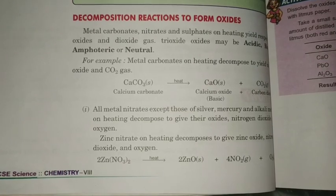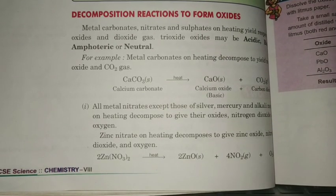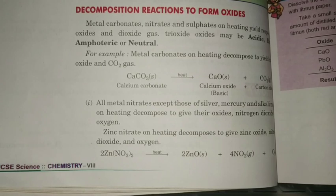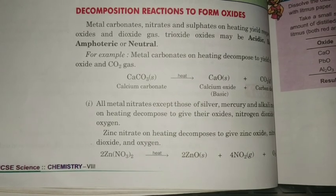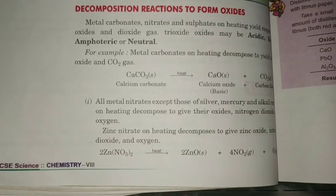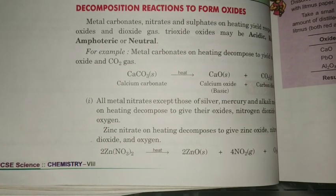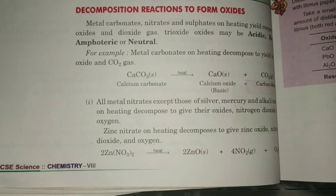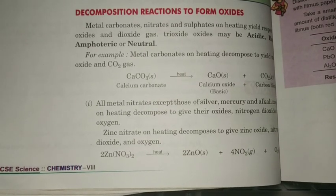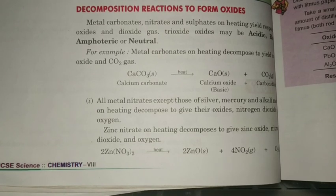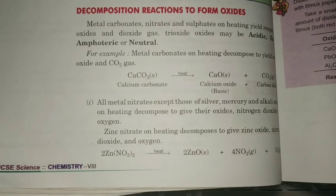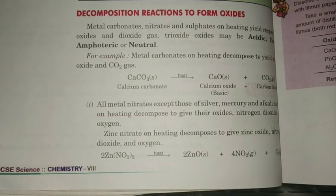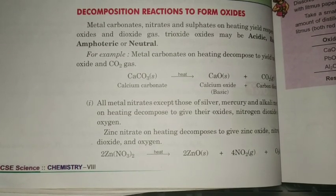Metal carbonates — where carbonate means CO3 2− ion and metal can be calcium, magnesium, sodium, or aluminum — along with metal nitrates (NO3−) and metal sulfates (SO4 2−): on heating, these give oxides and dioxide gas.